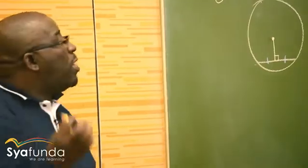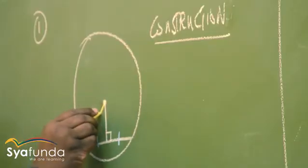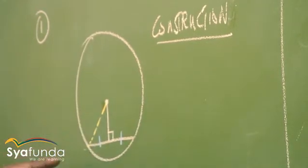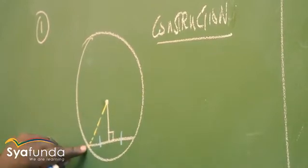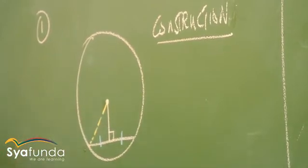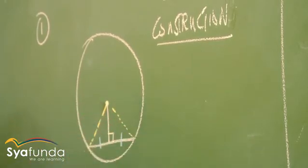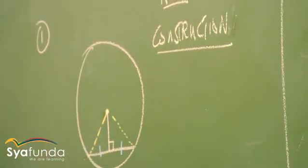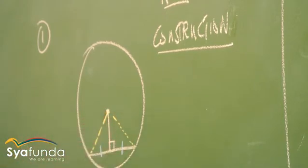So in this particular case, when I do my construction, I will join this line here to that chord. What is the name of this line? A line from the center of a circle to the circumference of a circle is called a radius. I've got a line from the center of the circle to this side again - that line is called the radius. So this is the radius and this is the radius. It comes from the center of a circle to the circumference.